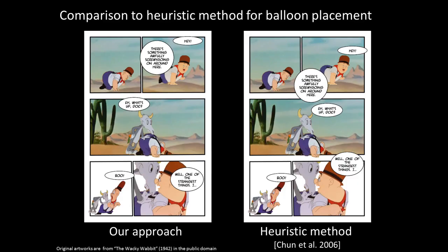We evaluate our approach by comparing it with the heuristic method for balloon placement. Here we show results by our approach and the heuristic method. Since the heuristic method only does balloon placement, we use the subject locations produced by our approach as input into the heuristic method. The heuristic method may mislead the reader — for example, it places the balloons in the first and third panels close to each other, which may make the reader skip the second panel and move directly to the third one. Our approach avoids this problem by using a more appropriate placement of balloons.